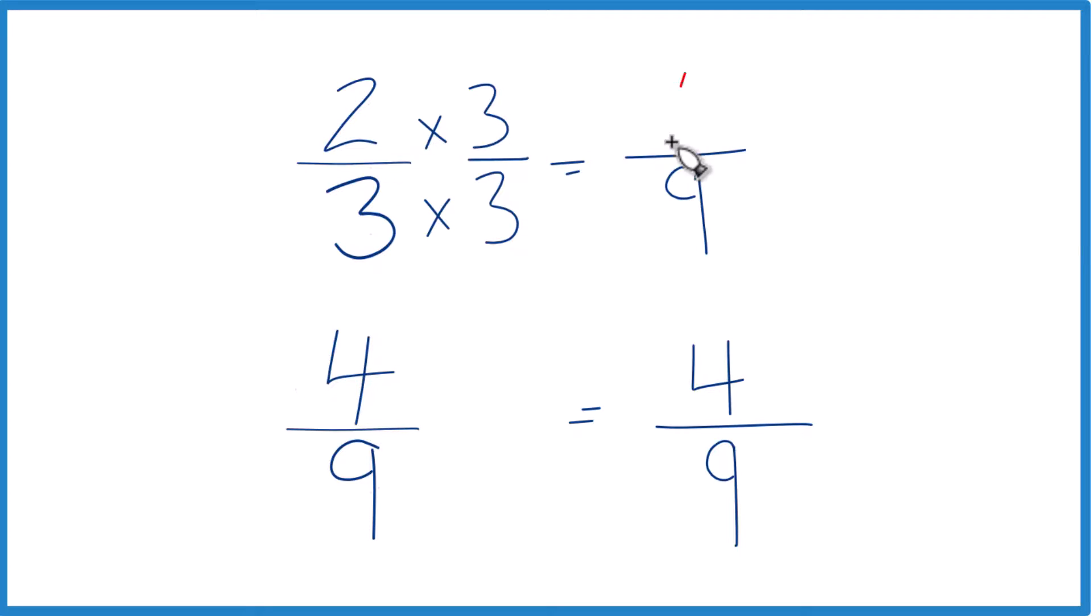Two times three is six, and six-ninths is an equivalent fraction to two-thirds. Now with the same denominator, we just compare the numerators. You can see that six is larger than four.